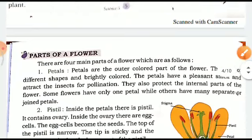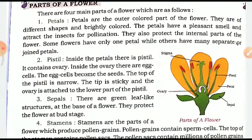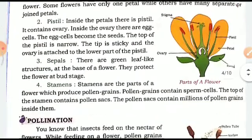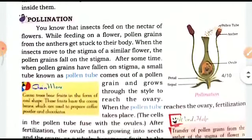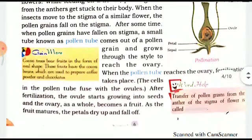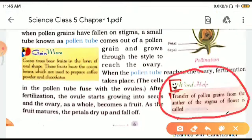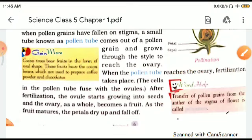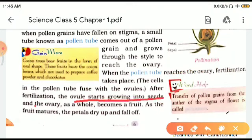We studied the parts of the flower which were petals, pistils, sepals, and stamens. Then we studied what pollination is — it is the transfer of pollen grains from the anther to the stigma of a flower. We also studied that the ovule starts growing into a seed and the ovary as a whole becomes a fruit. Ovule becomes seed and ovary becomes fruit.